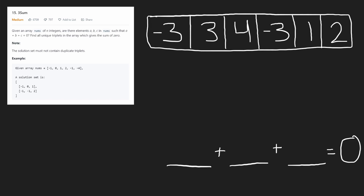Let's get into the question. We're given an input array of n integers. This array can have duplicates, as we can see in the example — two negative ones in this case. What we want to do is find three numbers of this array — a, b, and c — and we want them to sum to zero. In the example, there were two triplets that summed to zero. One problem is that we cannot have duplicates in our solution, so we're going to have to keep that in mind.